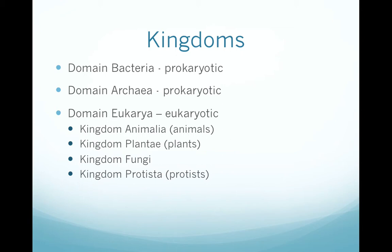Kingdom Protista is made up of a wide variety of organisms that are usually single-celled, including algae and protozoa like Giardia, which can cause severe diarrhea if you have large amounts of it in your gut, among other organisms.